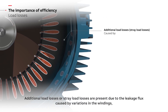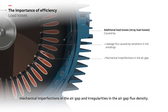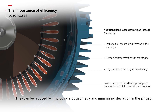Additional load losses, or stray load losses, are present due to the leakage flux caused by variations in the windings, mechanical imperfections in the air gap, and irregularities in the air gap flux density. They can be reduced by improving slot geometry and minimizing deviation in the air gap.